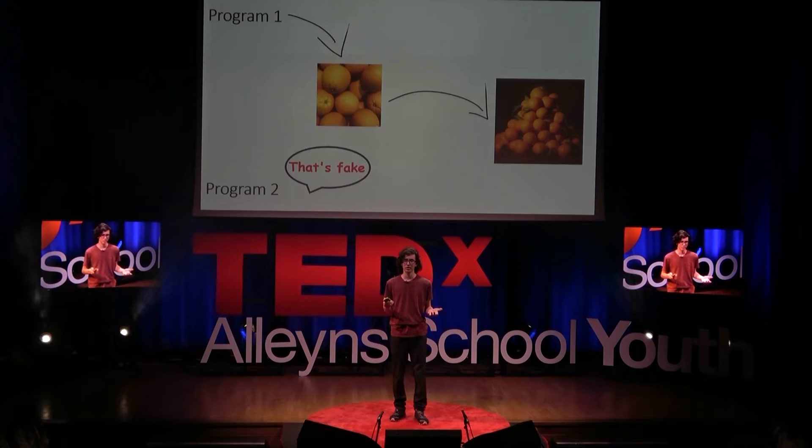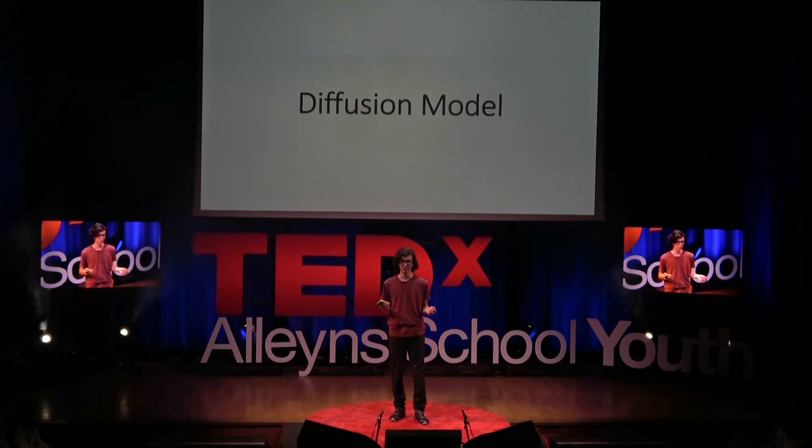A lot of early AI image generators, like DALL-E 1 and 2, used this system. However, by today's standards, it's pretty slow and inefficient, which is why nowadays we use something called a diffusion model.